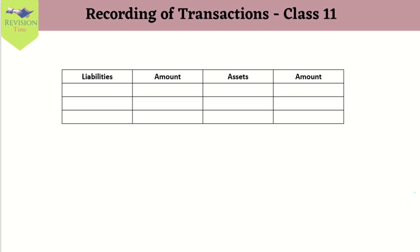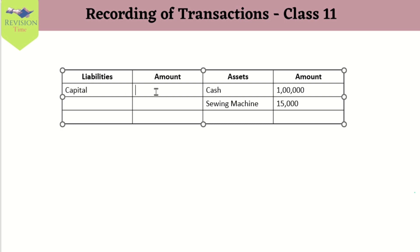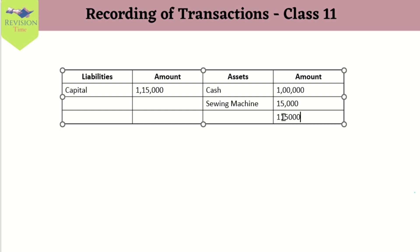Let us understand this with an example of a clothing store. As an owner starting a new business, you bring in cash of rupees 1 lakh. Since it is a clothing store, you also have a sewing machine worth rupees 15,000 used for business purposes. When an owner contributes something to the business it is termed capital, and the business is liable for that capital — this is the separate entity concept. Here, total assets equal liabilities, and in liabilities we have capital. The total comes to rupees 1 lakh 15,000.